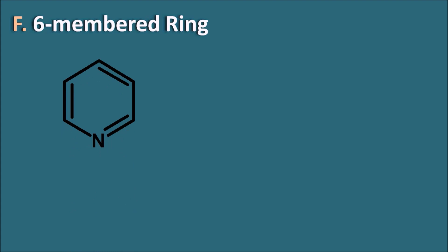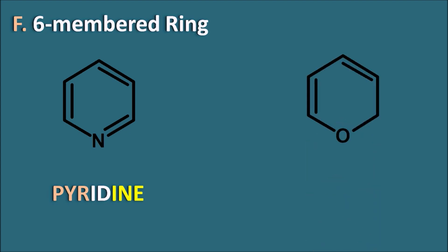Let us go with the six-membered ring systems. The simplest six-membered ring system has one heteroatom, nitrogen. We have already seen this is pyridine — pyridine is the nitrogen-containing six-membered ring system. If oxygen is present, then it is called pyrone.